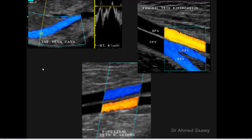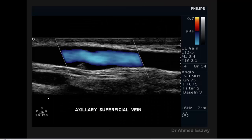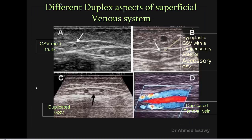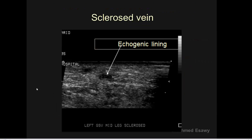This shows the inferior vena cava, superficial femoral vein, and profunda femoral vein with the superficial femoral artery — normal appearance. The great saphenous vein main trunk, with its normal Egyptian eye appearance in cross-section, may be hypoplastic with compensatory anterior accessory veins, or may be duplicated. Sclerosed echogenic lines of the great saphenous vein may also be seen.